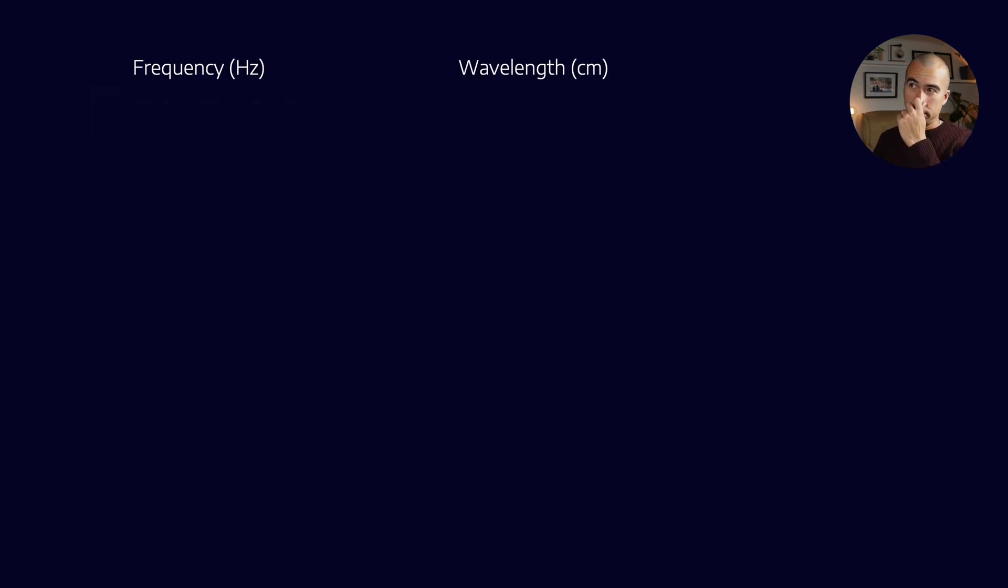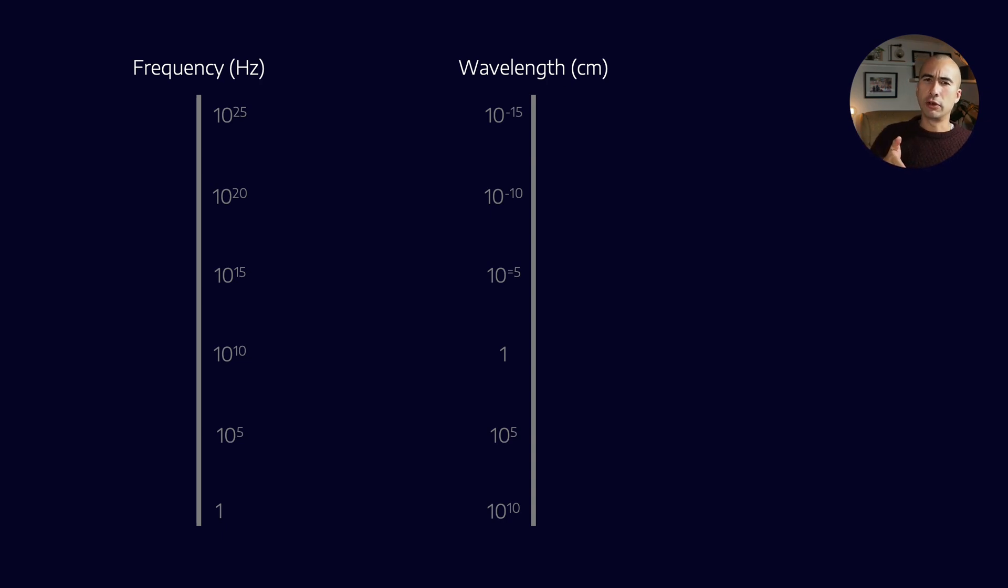So if you'll remember from, this is probably grade 8 or grade 9 physics, light exists on a spectrum of different wavelengths and frequencies. The reason we can convert between frequency and wavelength is because they're related to each other by the speed of the wave, and of course the speed of light is constant.